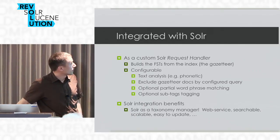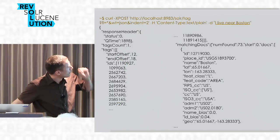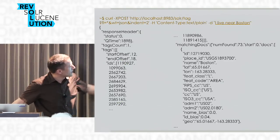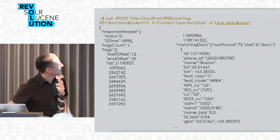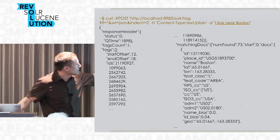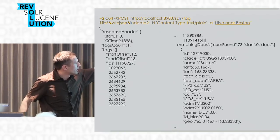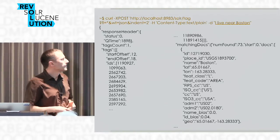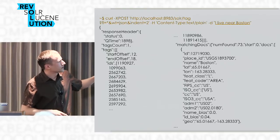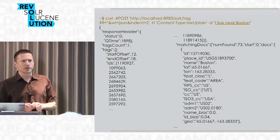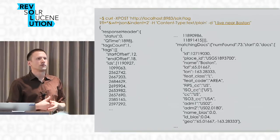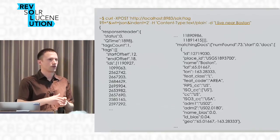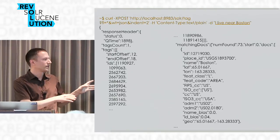Here's an example of me using it on the command line with the tag request handler. Normally it does not take nearly two seconds — that was a warm-up issue, probably building the FST. It returns a list of tags: start offset, end offset, character offsets, and a bunch of IDs into the gazetteer. It also returns the matching docs. It's not a typical Solr query — a typical Solr query gets maybe the top ten documents, but in the gazetteer setting, you want everything.